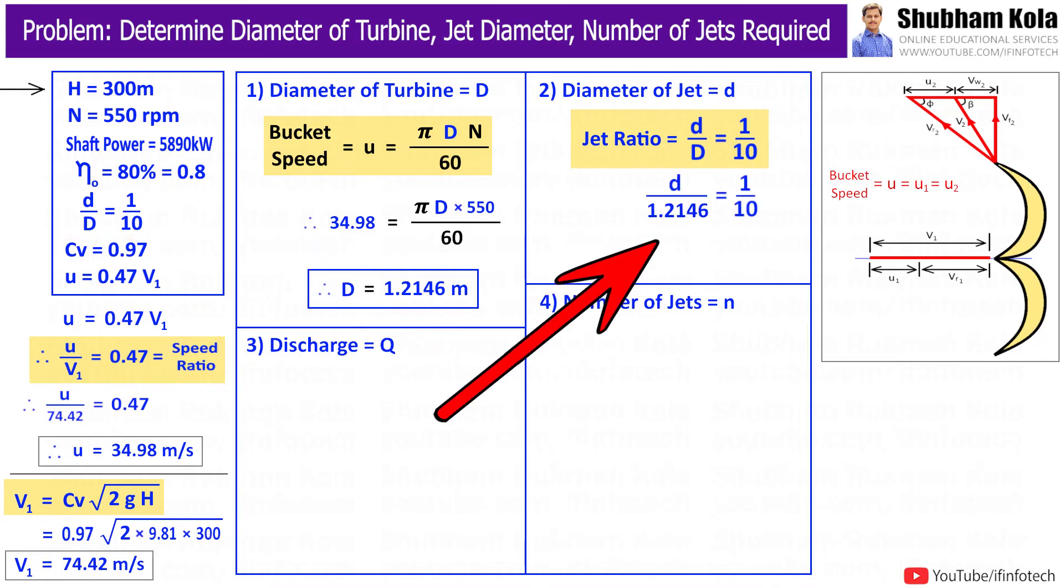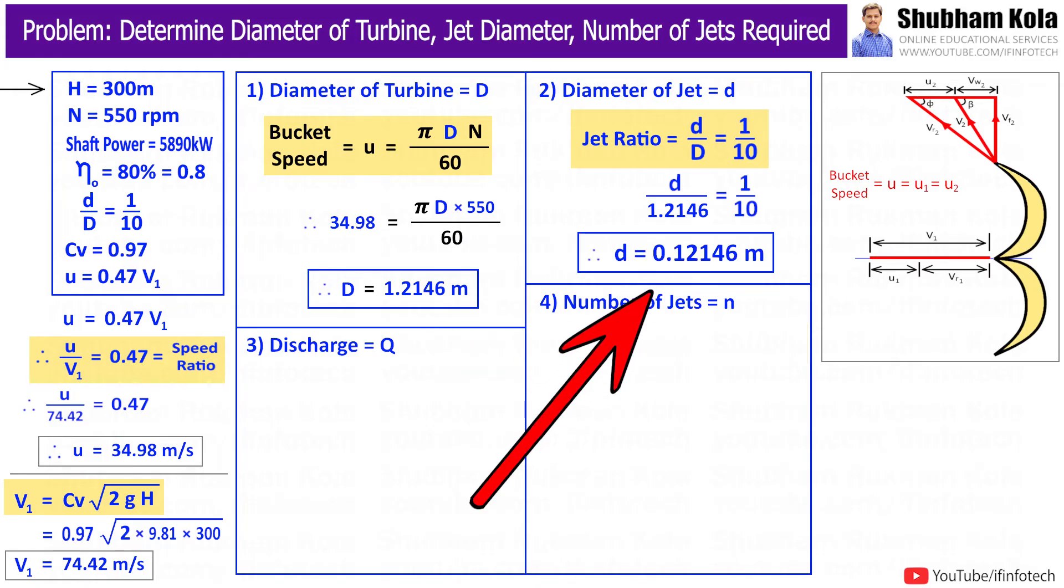Diameter of turbine D we have already calculated. Therefore, we will get jet diameter d as 0.1214 meter, that is equal to 12.14 centimeter.